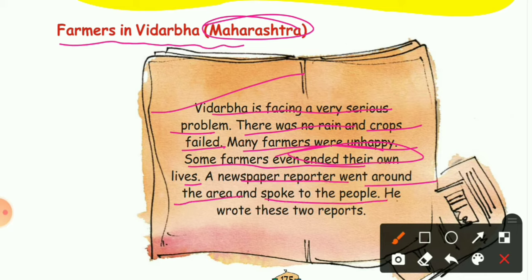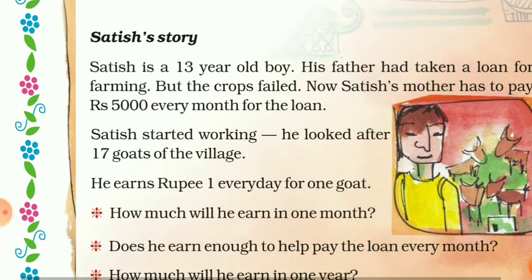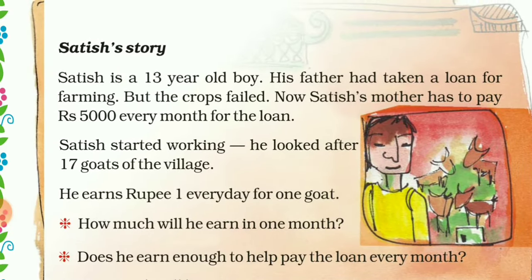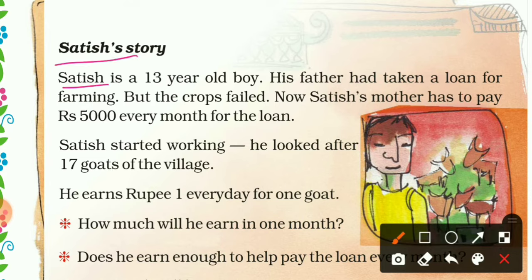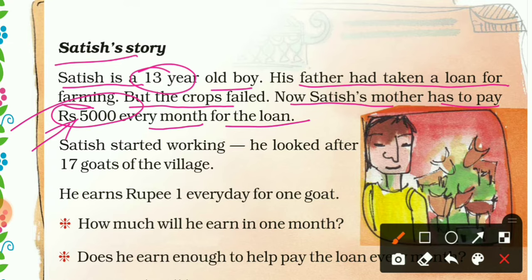A newspaper reporter went around the area and spoke to the people. He wrote two reports. The first report is Satish's story. Satish is a thirteen-year-old boy. His father had taken a loan for farming, but the crops failed. Now Satish's mother has to pay five thousand rupees every month for the loan, so Satish started working at the age of thirteen.